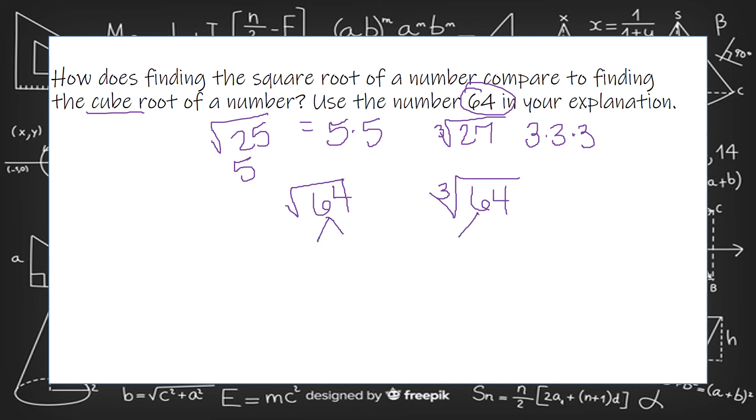So tell me what multiplies together to get 64. Tell me what multiplies by itself three times to give me 64 when you're telling me the difference between a square root and a cube root.